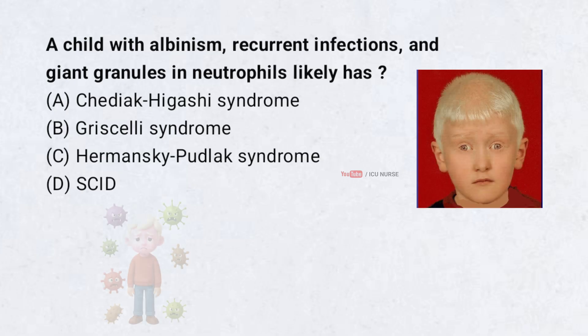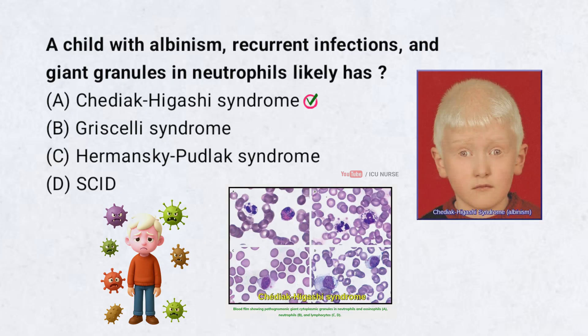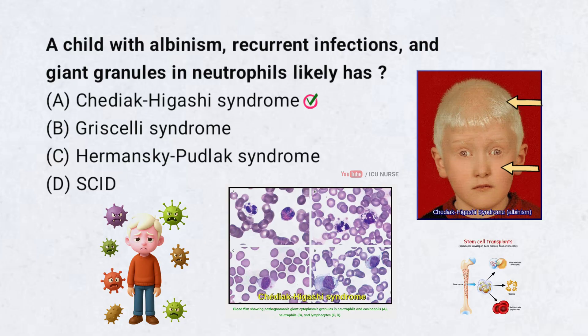A child with albinism, recurrent infections, and giant granules in neutrophils likely has: A. Chediak-Higashi syndrome. Correct answer: A. Chediak-Higashi syndrome. This rare genetic disorder disrupts how cells package and transport materials, causing partial albinism, light skin and hair, frequent infections, and abnormal granules in white blood cells. The giant granules in neutrophils impair their ability to fight bacteria, leading to recurring illnesses. Early treatment is important. A stem cell transplant can help before the disease worsens. Without treatment, it can progress to a dangerous phase with high fever and organ damage.